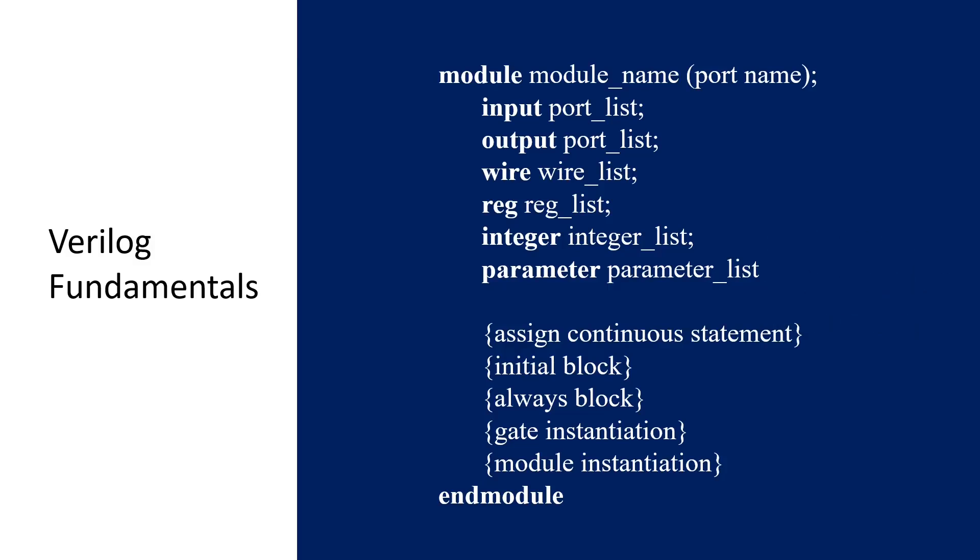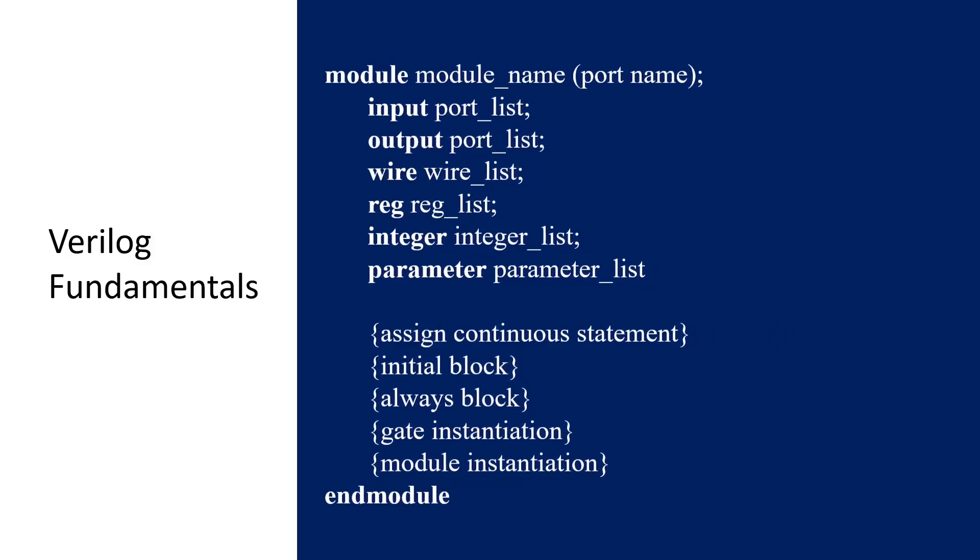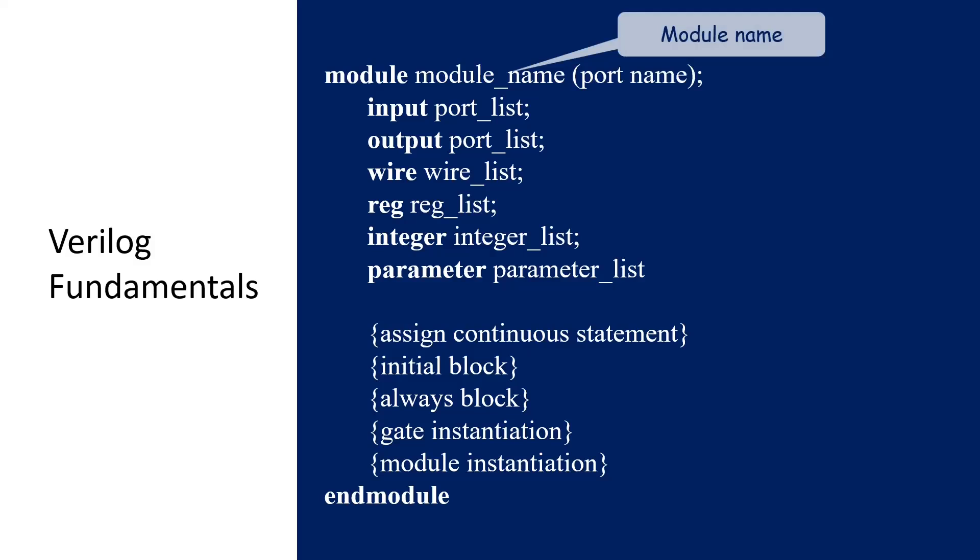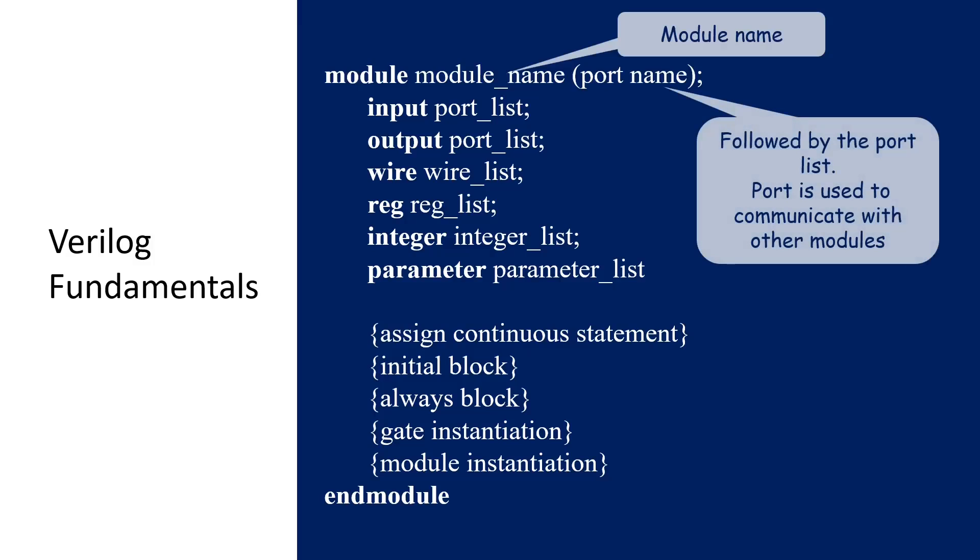This is a general structure of a Verilog program, where the described circuit is called a module. It consists of two main parts: the first part is the declarative part, and the second part is the module description part. The first line of the program is the module name, where it is defined by the programmers. In the bracket is the list of ports. The port is used to communicate with other modules.